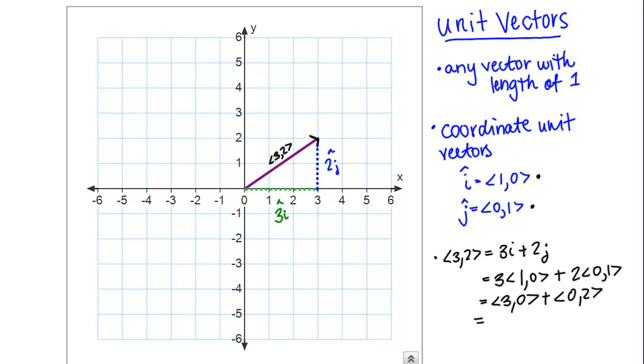Then if I add those by components, I get back my vector <3,2>. This makes sense, right? With i and j as defined here, I can now write vectors, position vectors in this new kind of i, j notation.